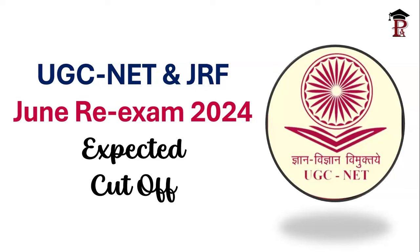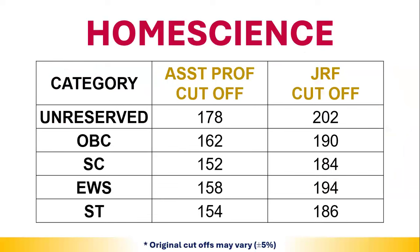We will start with the Home Science subject. For the unreserved (general) category, 178 and above will qualify for Assistant Professorship, whereas for JRF you can expect 202 marks. Please note this is a tentative cutoff — when the official cutoff is released, there will be variations.